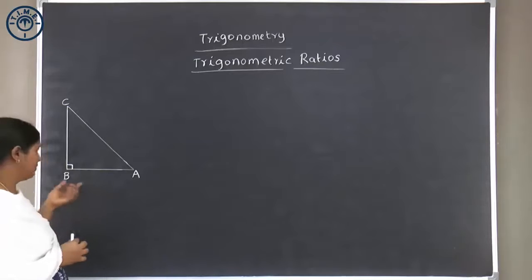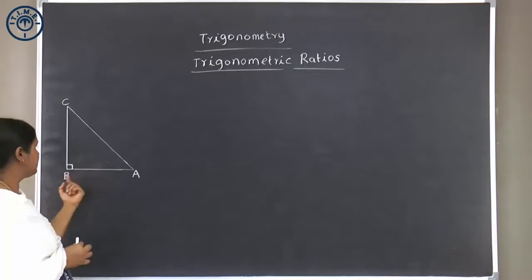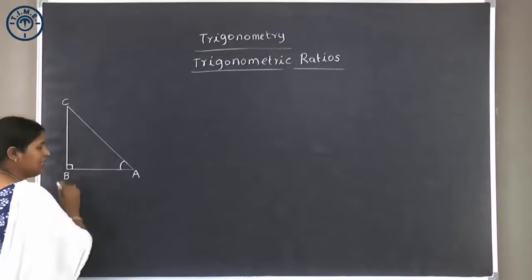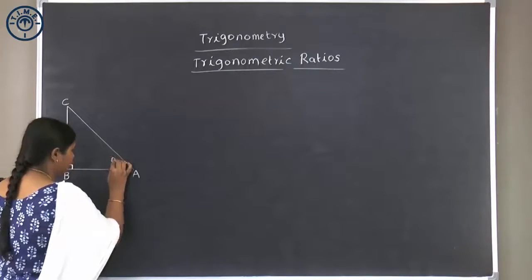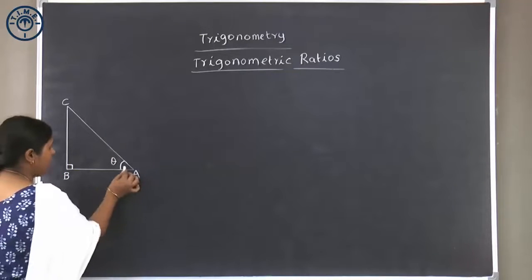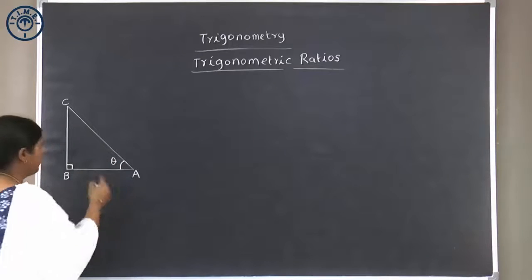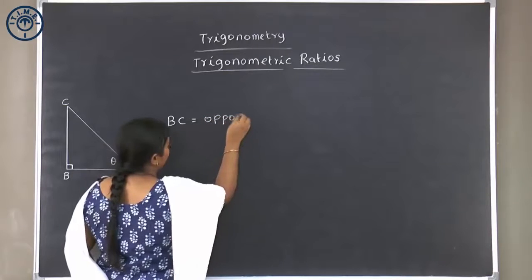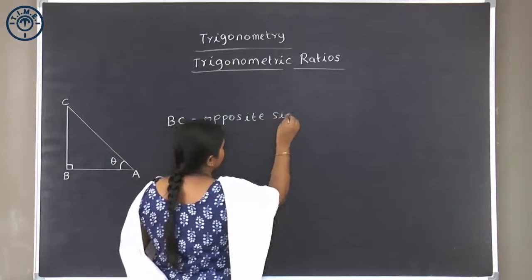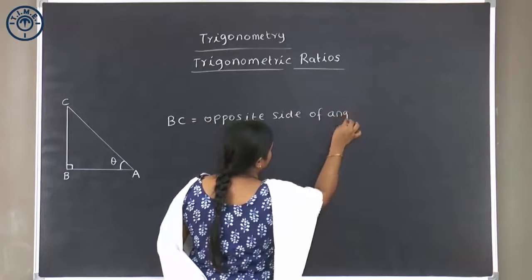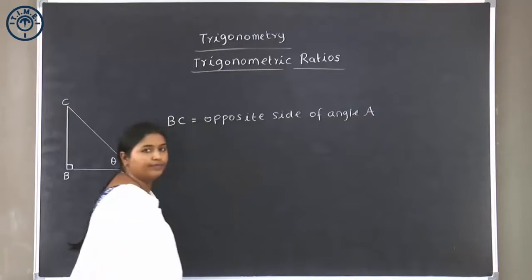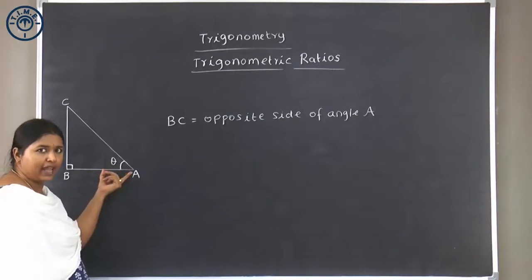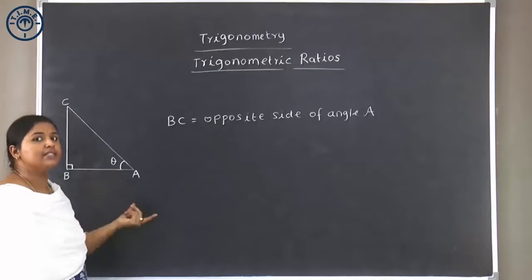Here is a right angled triangle, right angled at B. I have named the right angled triangle as A, B, C. Let me take angle CAB as theta. The side opposite to angle A, or angle theta, is BC. BC is called the opposite side of angle A. The remaining side AB is adjacent to angle theta or angle A. So AB is called the adjacent side of angle A.